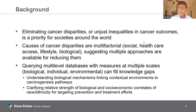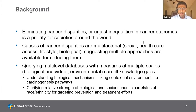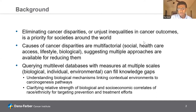The optimist in me suggests that even though there's a lot of complexity here, there could also be a lot of opportunities to address disparities, provided we understand how these different factors relate to one another. For that reason, using multi-level databases that combine measures at multiple scales — biological, individual, and environmental — might help us fill important knowledge gaps. The two areas I want to focus on are: first, understanding biological mechanisms linking contextual environments to carcinogenesis pathways; second, clarifying the relative strength of biological versus socioeconomic correlates of race-ethnicity for targeting prevention and treatment.